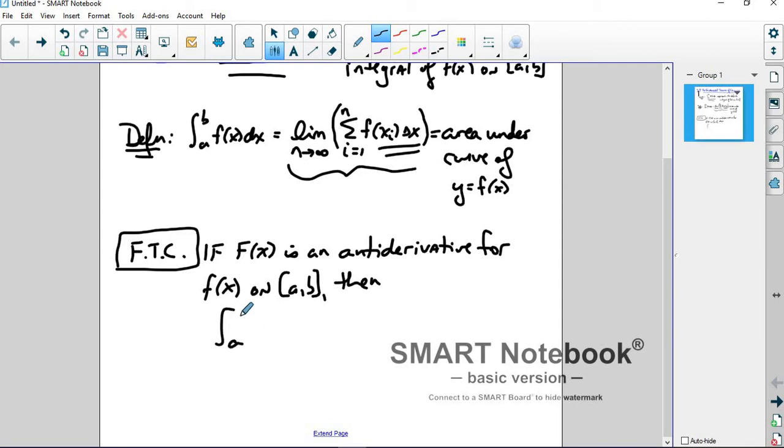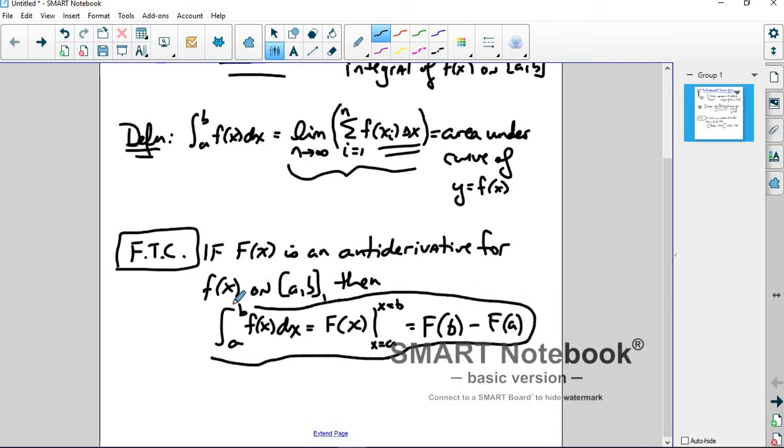Then, if you want to evaluate from a to b, f(x) dx, if you want to evaluate this integral, then you take the antiderivative function. Don't worry about the constant. We'll talk about that in a minute. And then evaluate it from a to b. This straight line is called an evaluation bar, and how that works is you plug in the top number, you plug in the bottom number, and then you subtract them. So this is one version. There's really two parts to the fundamental theorem of calculus. This is the part that we care about in this class, and this is the fundamental theorem of calculus.